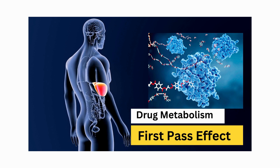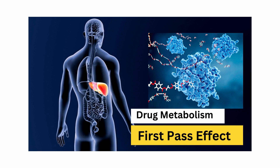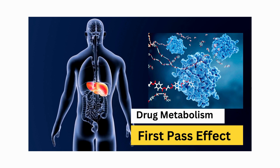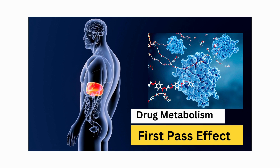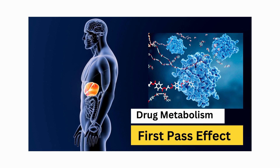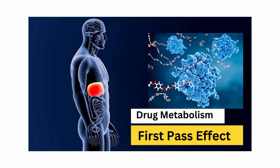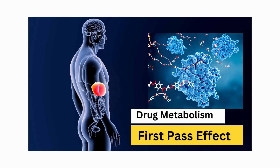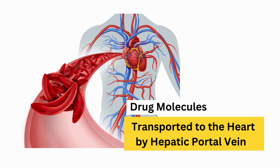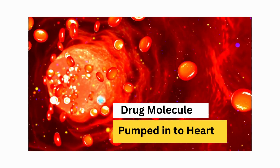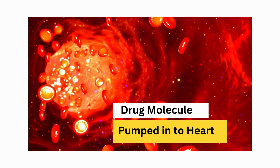The liver is a major site for drug metabolism, a process also referred to as the first pass effect. After the drugs are metabolized in the liver — or for drugs that are not metabolized — both are transported to the heart via the hepatic portal vein.